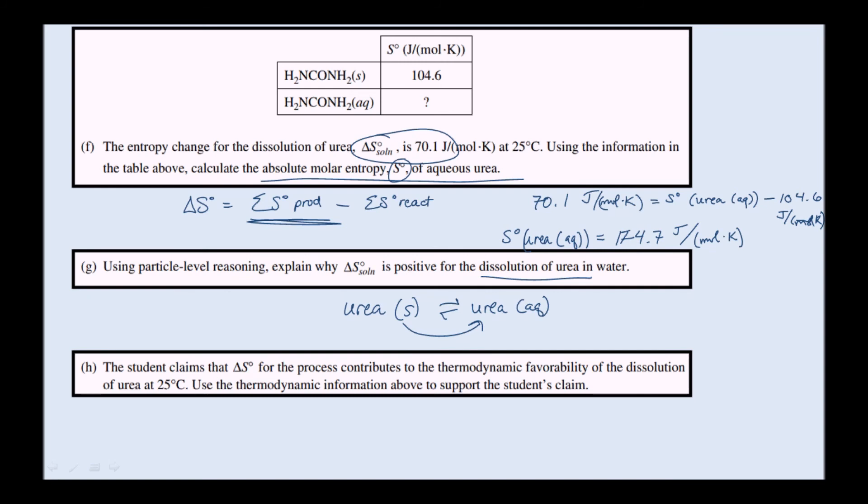Part H: The student claims that delta S for the process contributes to the thermodynamic favorability of the dissolution of urea at 25 degrees Celsius. Use the thermodynamic information above to support the student's claim. We can go back to our equations page and look at this formula: delta G equals delta H minus T delta S. We know that the sign of Gibbs free energy indicates the reaction's spontaneity. A negative delta G is a spontaneous reaction and a positive is non-spontaneous.